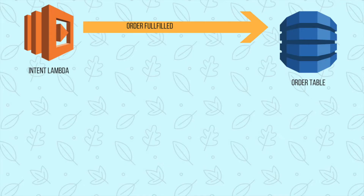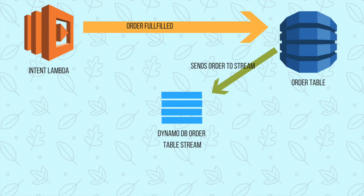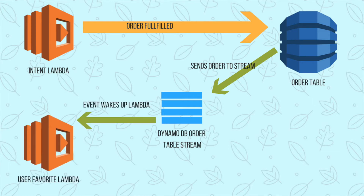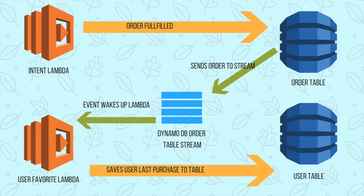It sounds complicated, but it's not. We have the Lambda we already created — that is our intent Lambda. Whenever that intent Lambda has a fulfillment it will call DynamoDB and store the order. When the order gets stored, DynamoDB will write to the stream an event containing the user ID, drink, and size. Another Lambda will pick that up and write to a separate DynamoDB table — the user table. Then whenever the user comes again to the intent Lambda, it will check the user table if the user exists.